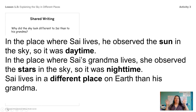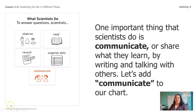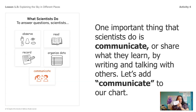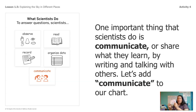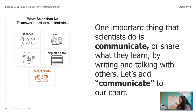Let's put these three sentences together and read them: In the place where Sai lives, he observed the sun in the sky, so it was daytime. In the place where Sai's grandma lives, she observed the stars in the sky, so it was nighttime. Sai lives in a different place on earth than his grandma. Nice work! What we did today was communicate — we communicated to our partner when we were talking, and we communicated to Sai when we wrote out why what he saw was different from his grandma. Let's add communicate to our chart. We have: observe, read, record, organize, and now communicate.